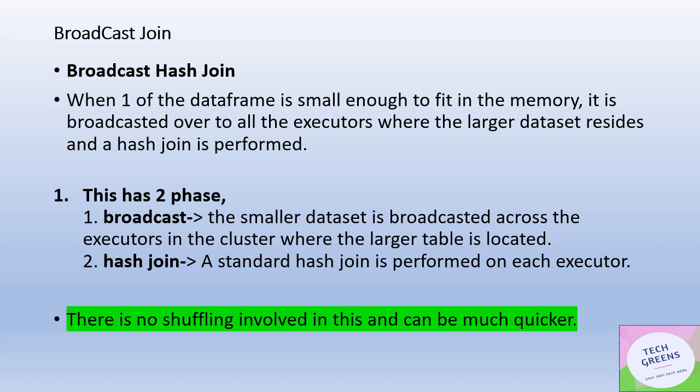Broadcast join is the best of the lot in the sense that there is no shuffling at all. By default, the broadcast threshold is 10 MB. If one of the tables happens to be less than 10 MB, it can be broadcasted across all nodes in the cluster, and your join becomes a local lookup on each local node. There are two phases: first, the smaller table is broadcasted across the executors where the larger table is located; second, a classic hash join is performed on the individual executors.